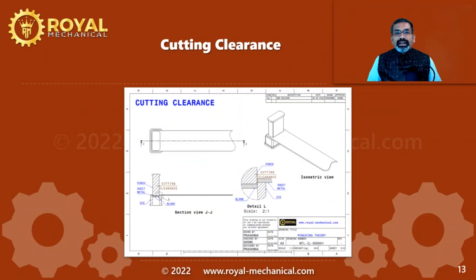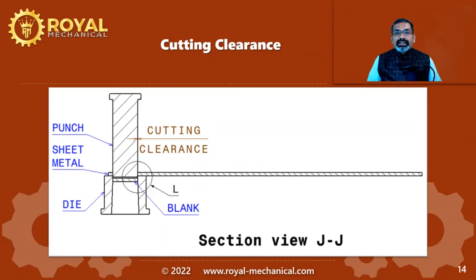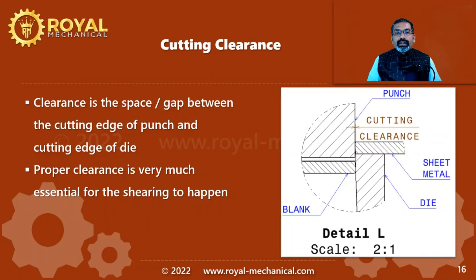I have prepared an illustration to explain the cutting clearance for you. Let's take a closer look at section view JJ, and then at detail view L. Cutting clearance is nothing but the gap between the cutting edge of the punch and the cutting edge of the die. A proper cutting clearance is very essential for the shearing to happen.